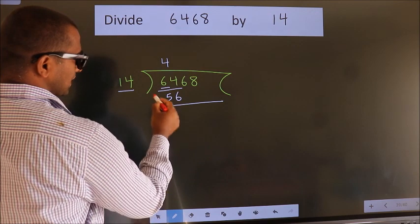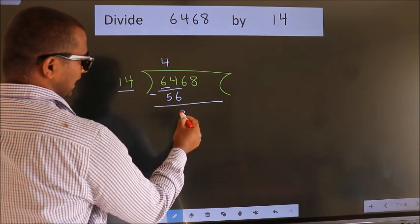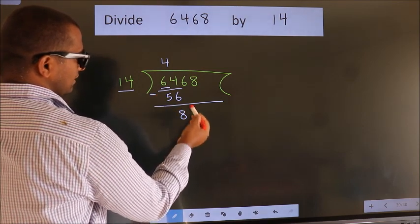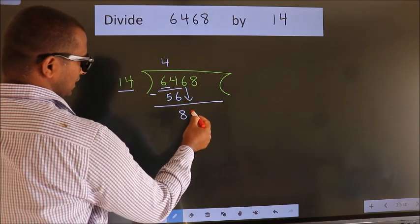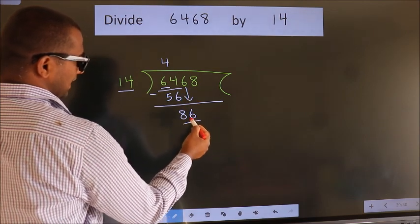Now we subtract and get 8. After this, bring down the next number, 6. So we have 86.